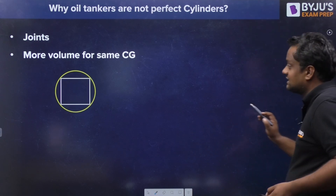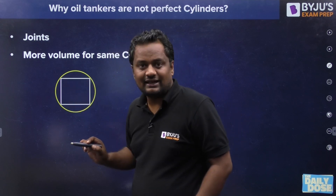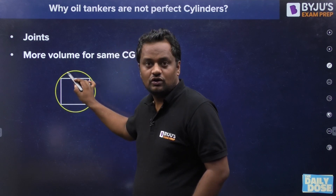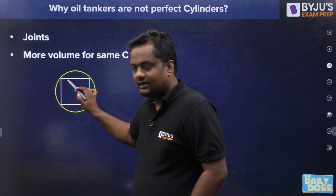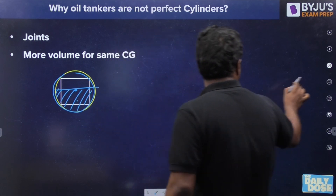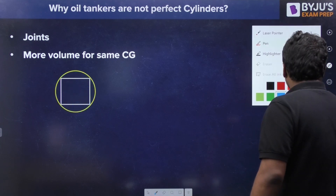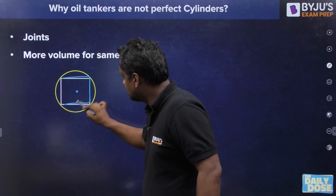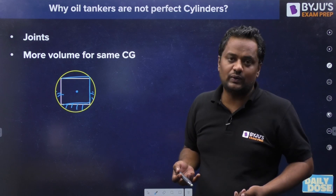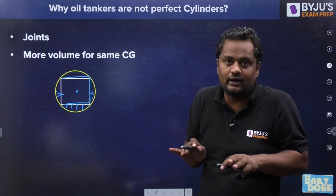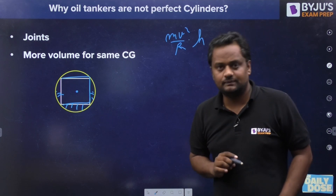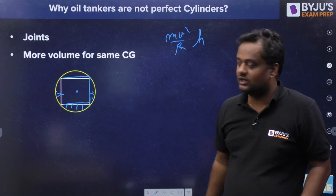Now, another reason many may not be aware of: suppose we have a rectangular tanker — its center of gravity (CG) is at a certain height. For a circular cross-section of the same dimensions, the CG is at the same height, but the cylindrical shape allows us to carry more volume of liquid for the same CG position. CG should be lowered because when a vehicle is on a curve, the overturning moment is MV²/R × H, so a lower H means less overturning moment, while carrying more liquid.